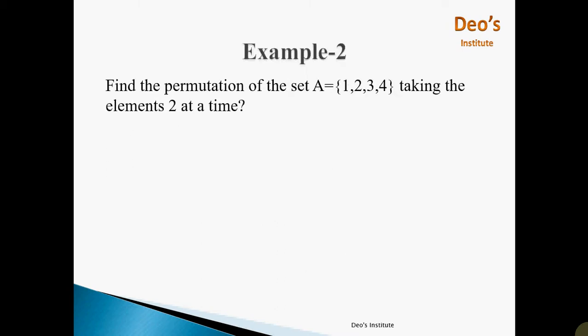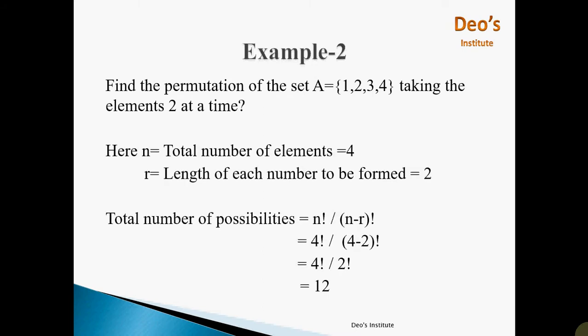Example 2: Find the permutation of a set A equal to {1, 2, 3, 4} taking elements 2 at a time. Here N is equal to total number of elements, that is 4. And R is the length of each number to be formed, that is equal to 2. So just put this N and R in nPr and you get the result as 12.